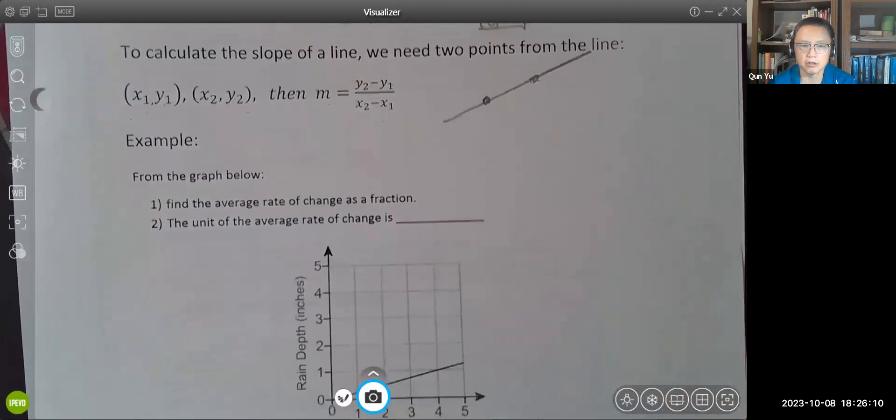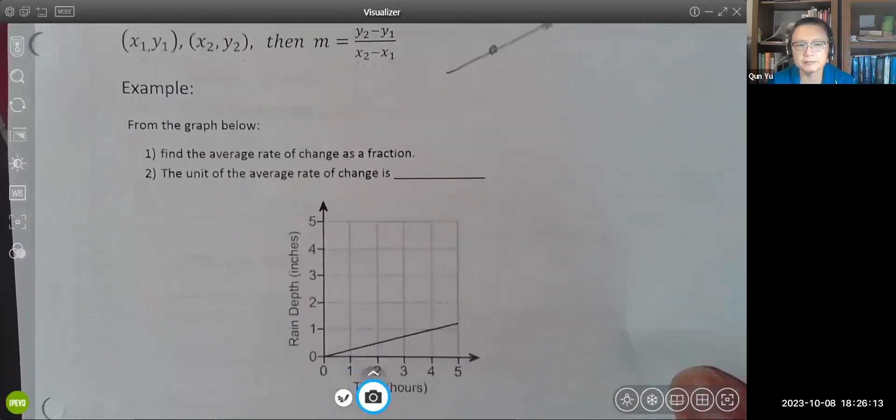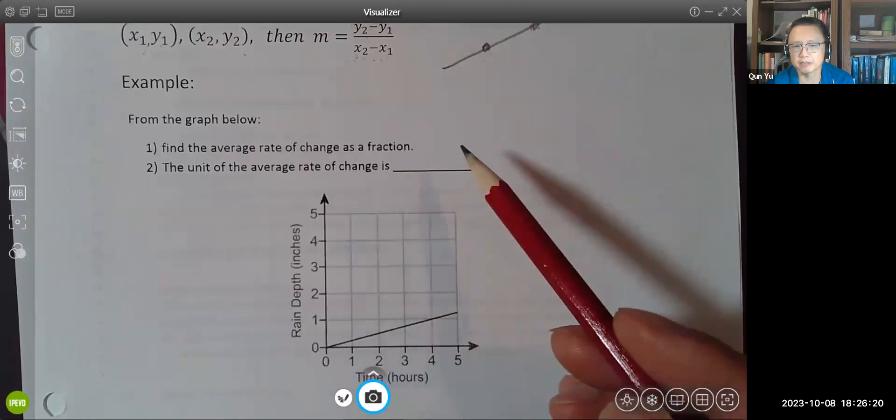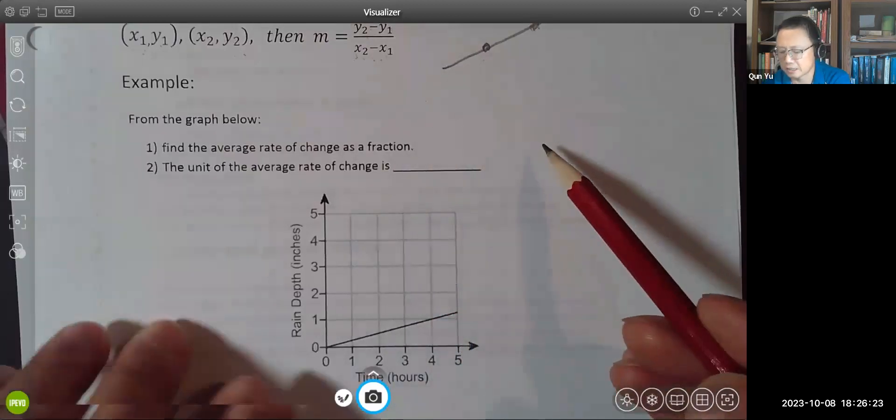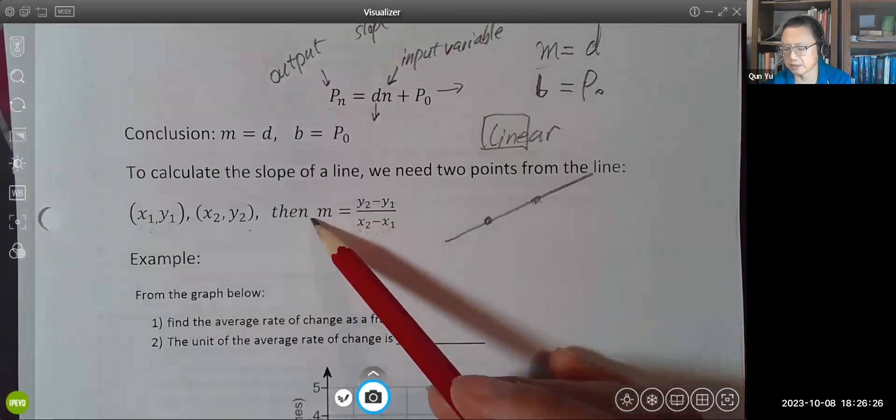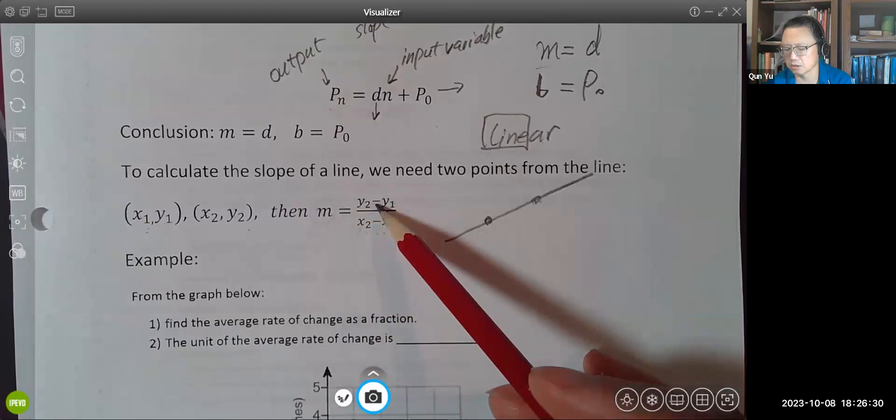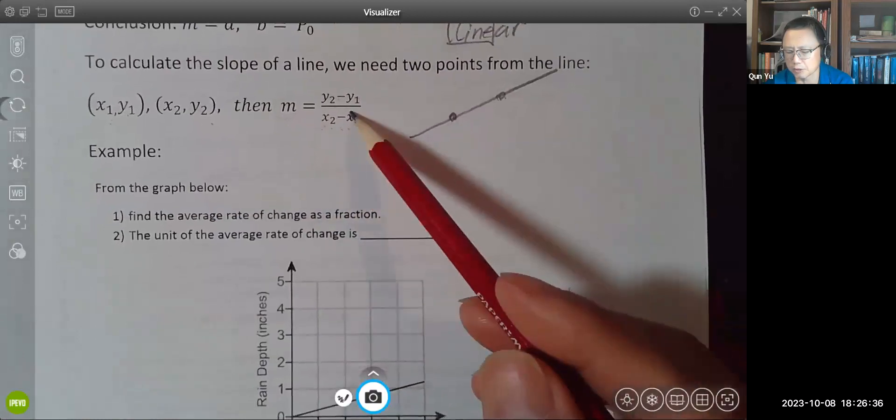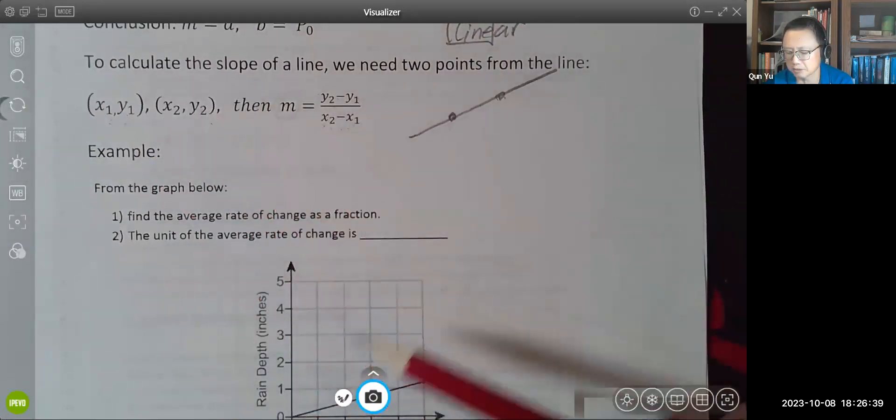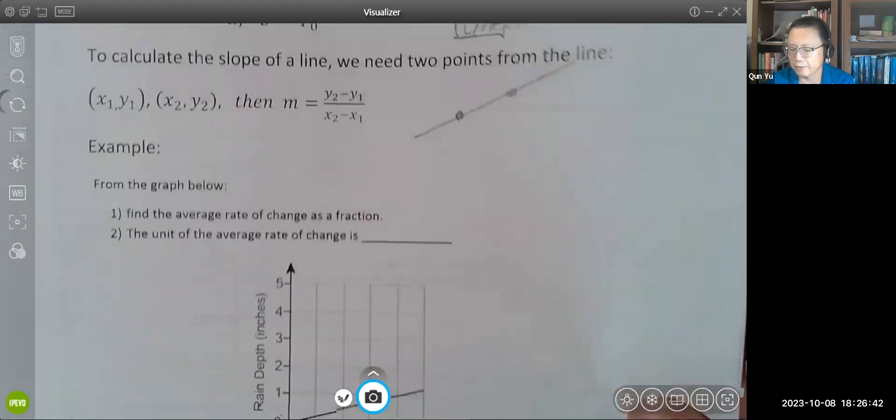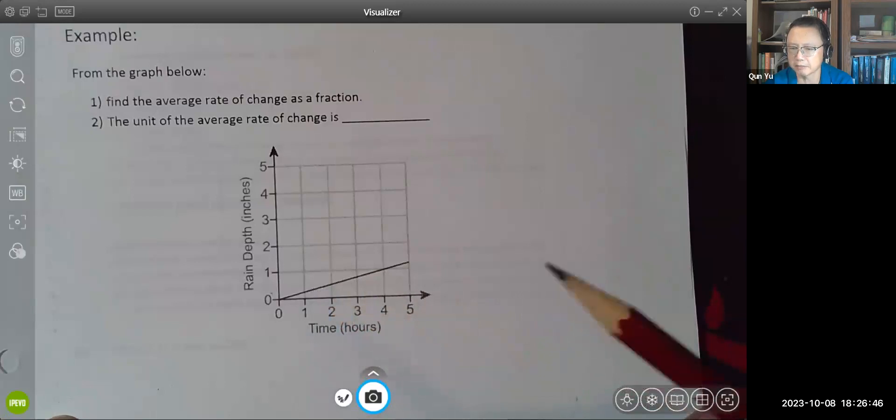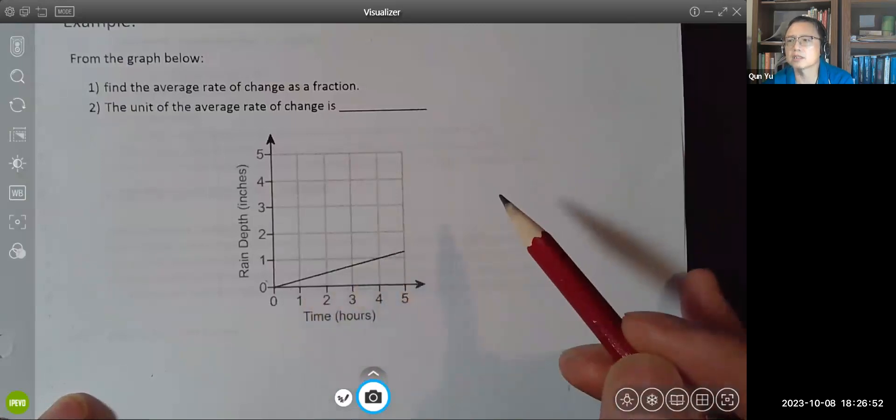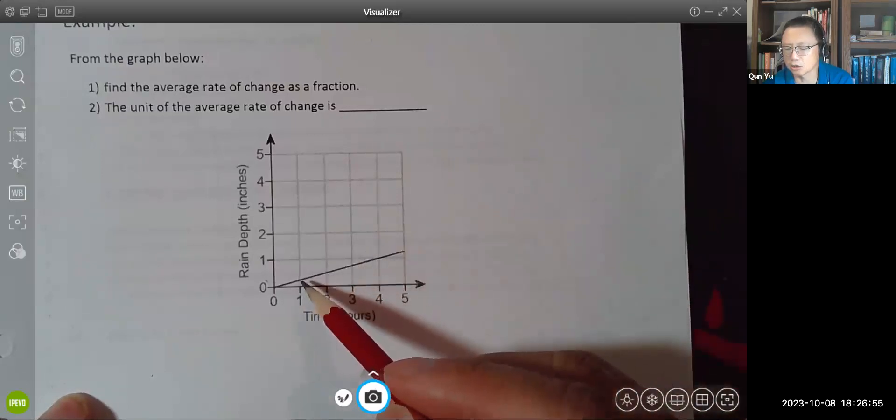Okay, now let's look at our example here. We have two questions here. From this graph, find the average rate of change as a fraction. Why a fraction? Because that's how we calculate the slope, which is also called the average rate of change. Now in order to calculate this slope using this formula, we need to identify two points from this line. In theory, any two points from this same line will give you the same slope.